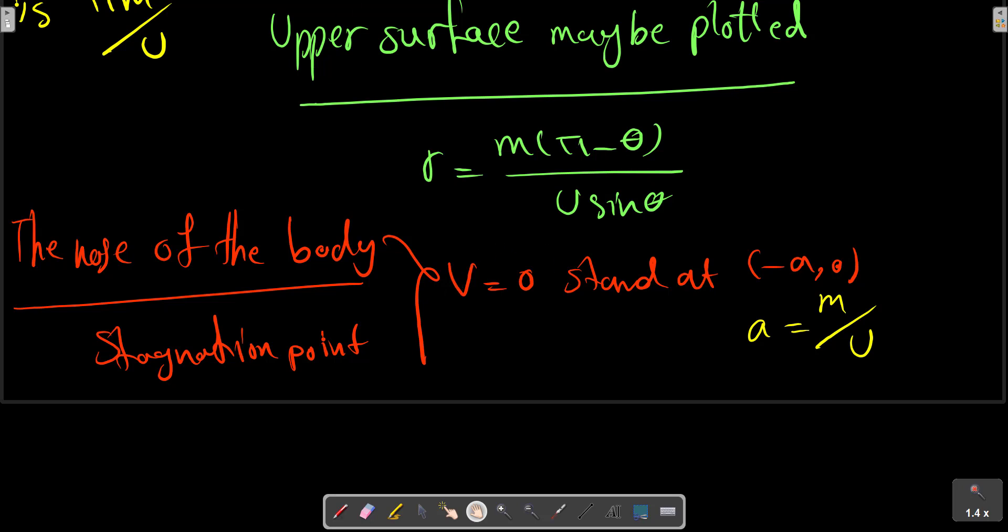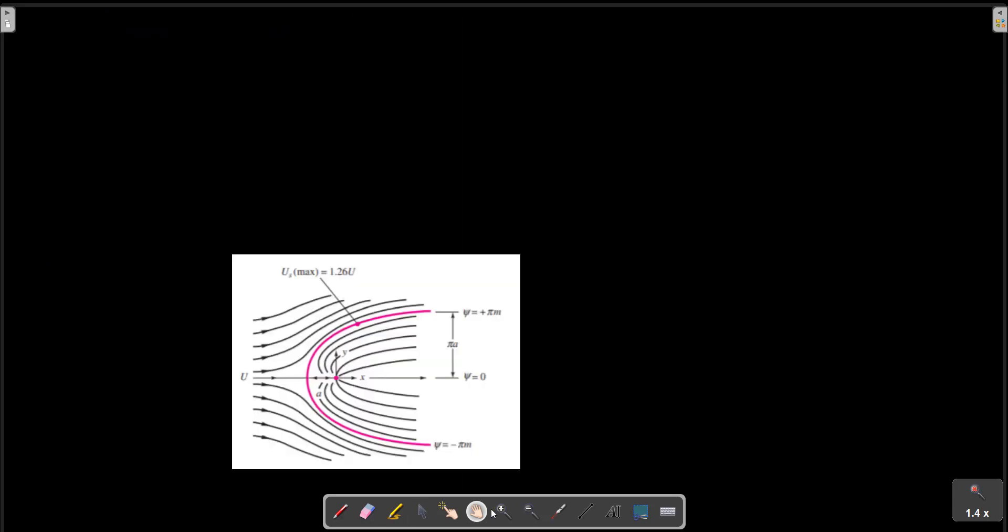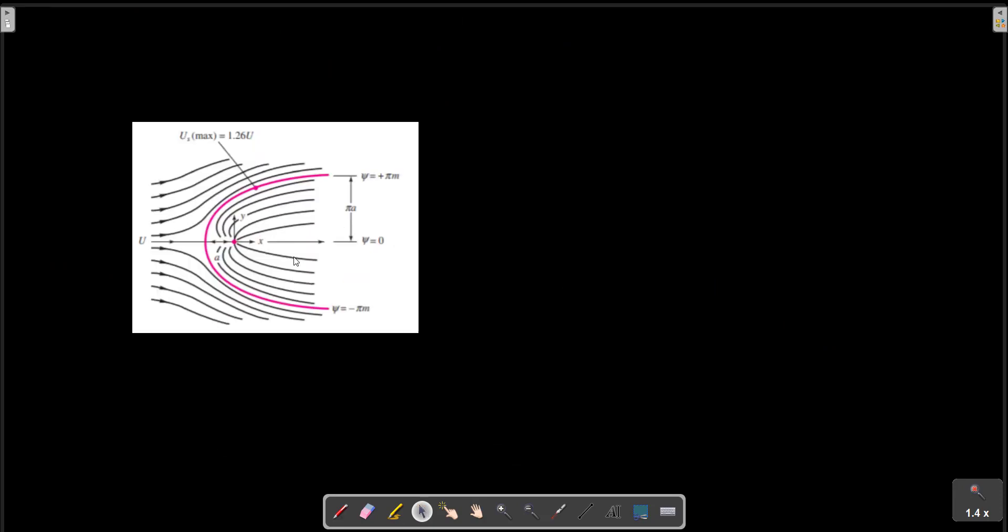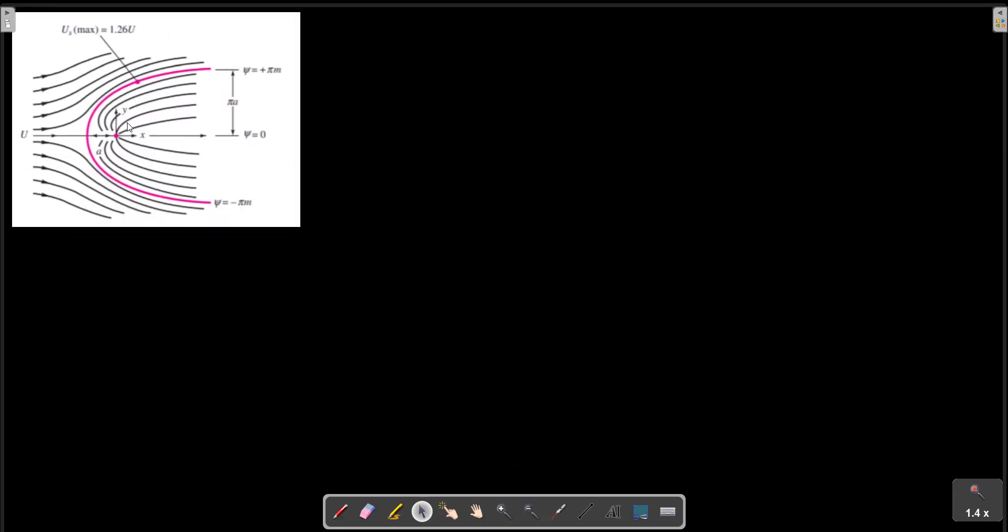The streamline ψ equals zero also crosses this point. Recall that streamlines can cross only at a stagnation point. The velocity components U and V are found by differentiation from the previous relation.